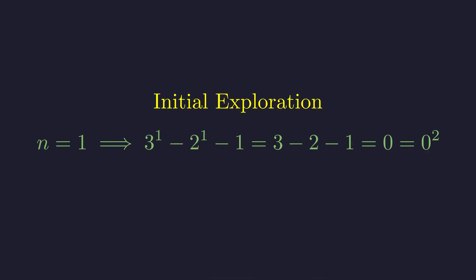Whenever you see a problem like this, the first thing to try is plugging in some small values and seeing what happens. Starting with n equals 1, we get 3 minus 2 minus 1, which is 0. And 0 is indeed a perfect square, so we have our first solution.